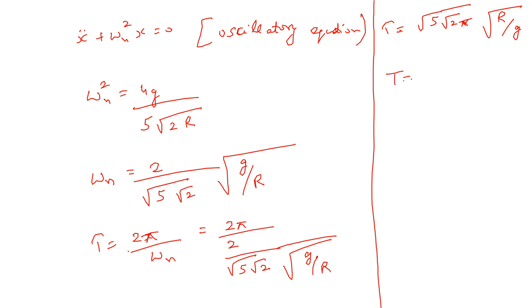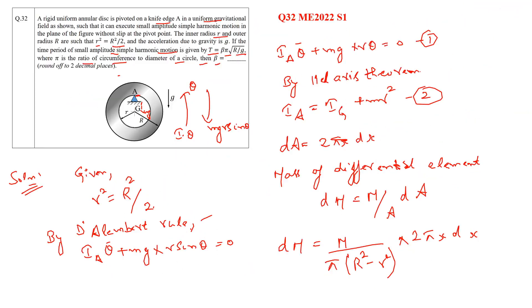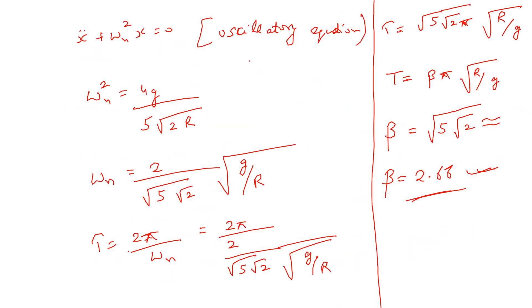Comparing with the given expression T = β·π·√(r/g), we find beta = √5·√2, and solving this out gives β ≈ 2.66, which is the answer. This is how we solve this type of question.